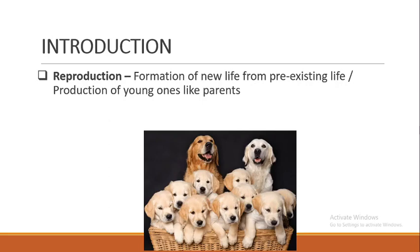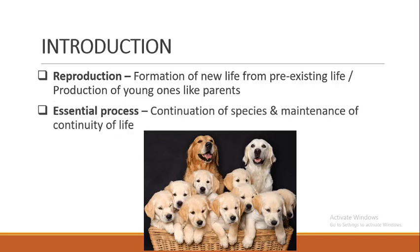Why is reproduction important? It is a very essential process for the continuation of species. If we have a last pair of dogs on Earth and they don't reproduce, the species will go extinct. Reproduction also maintains the continuity of life — if there is no reproduction, life will not continue. That's why reproduction becomes a very, very essential process among all life processes.